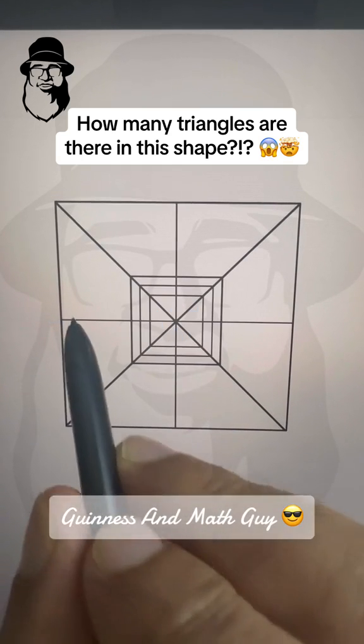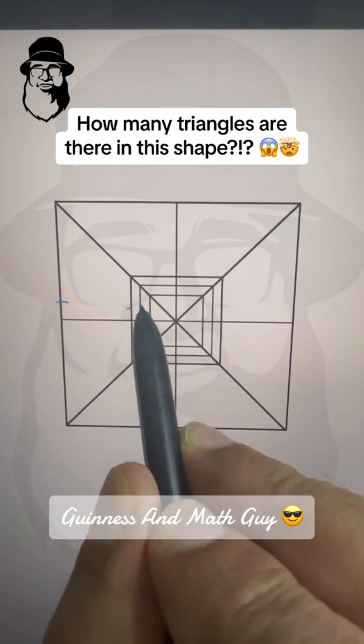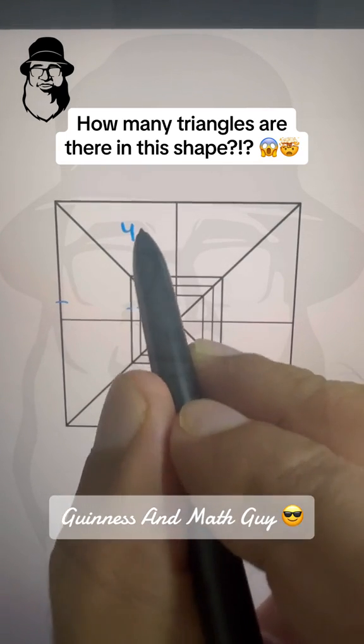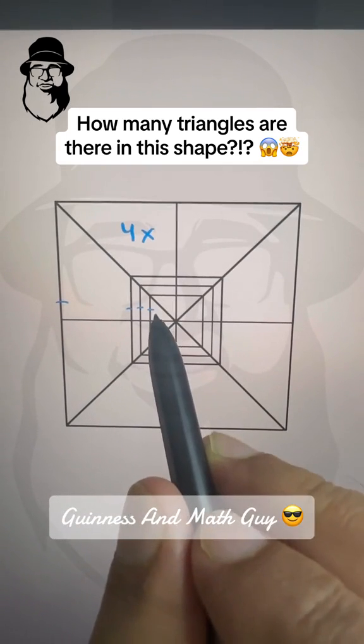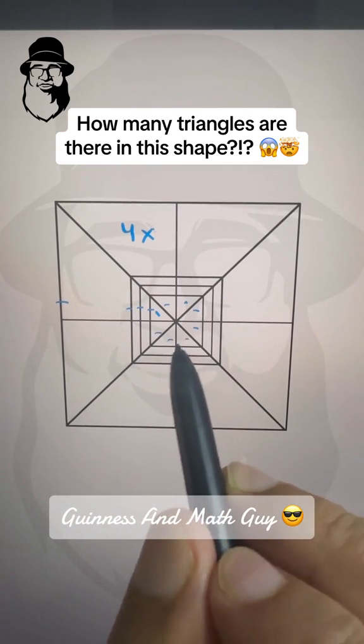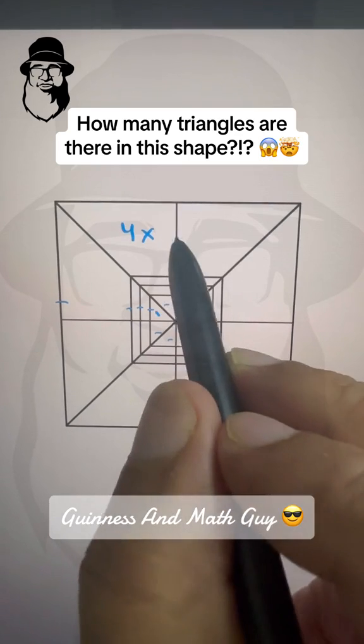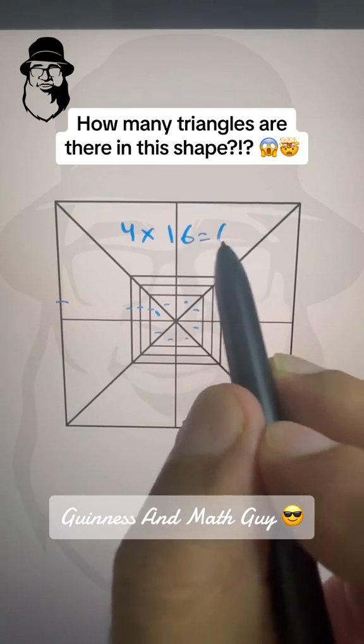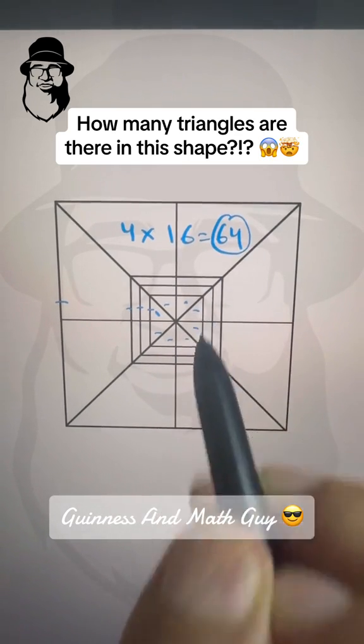Same way, count here, 1, 2, 3, 4. So 4 times 1, 2, 3, 4, 5, 6, 7, 8, and double of 8 is 16. So 4 times 16 is 64. 64 is the answer.